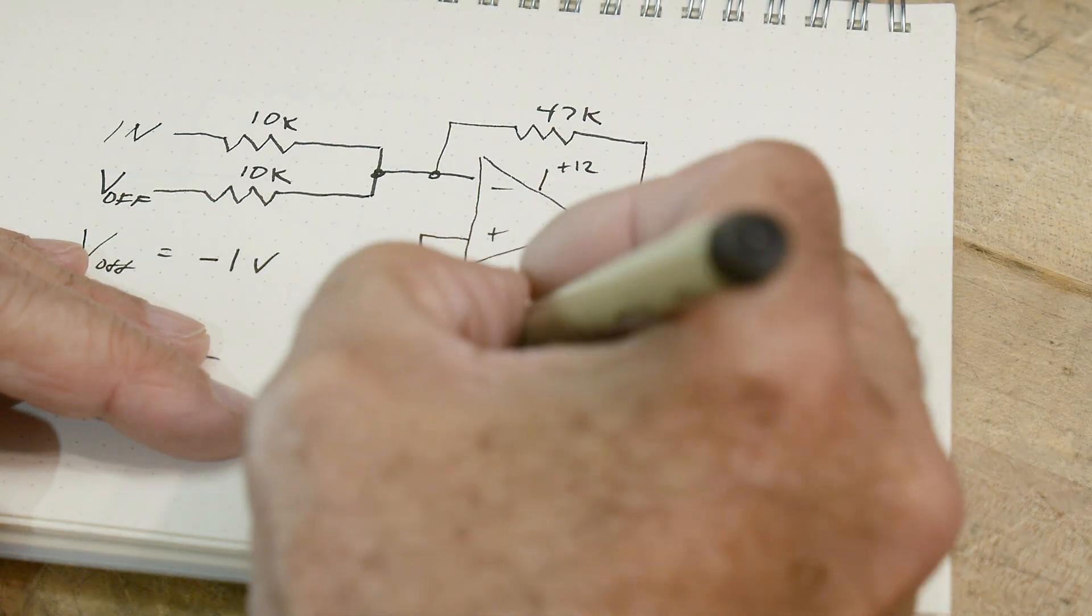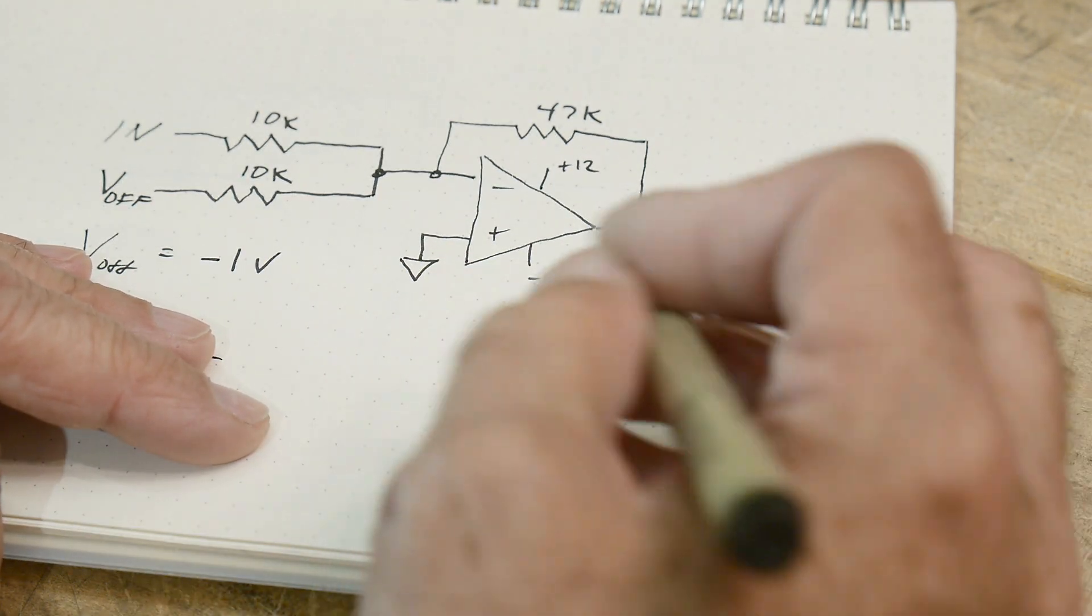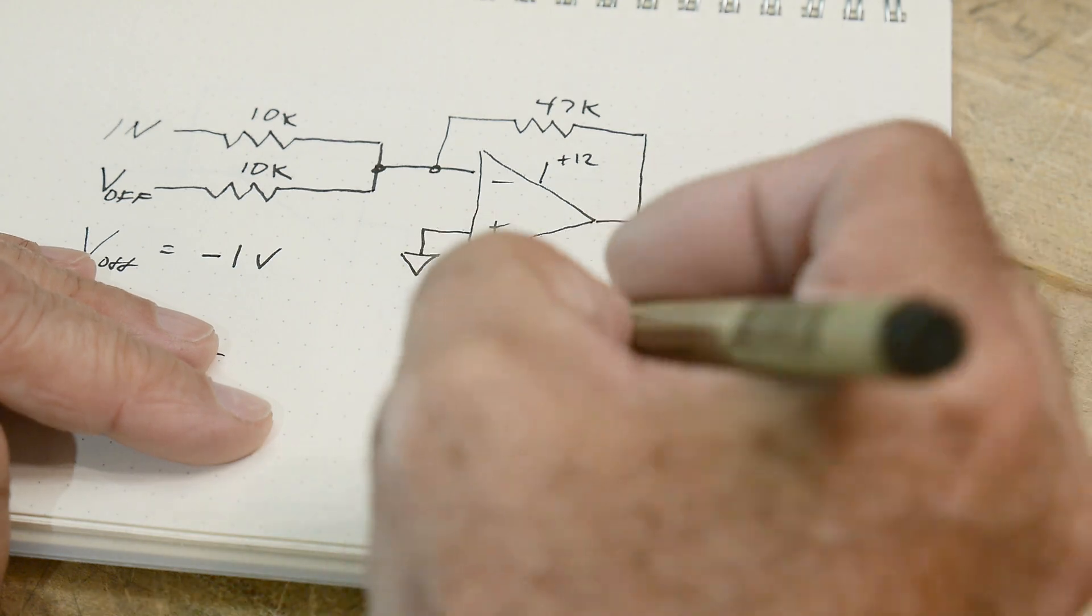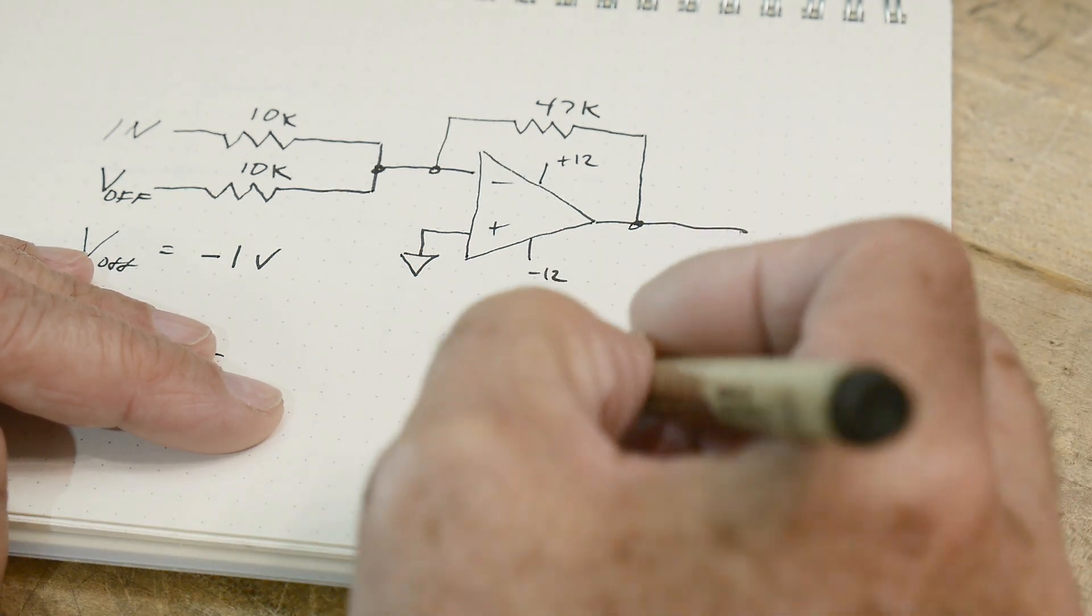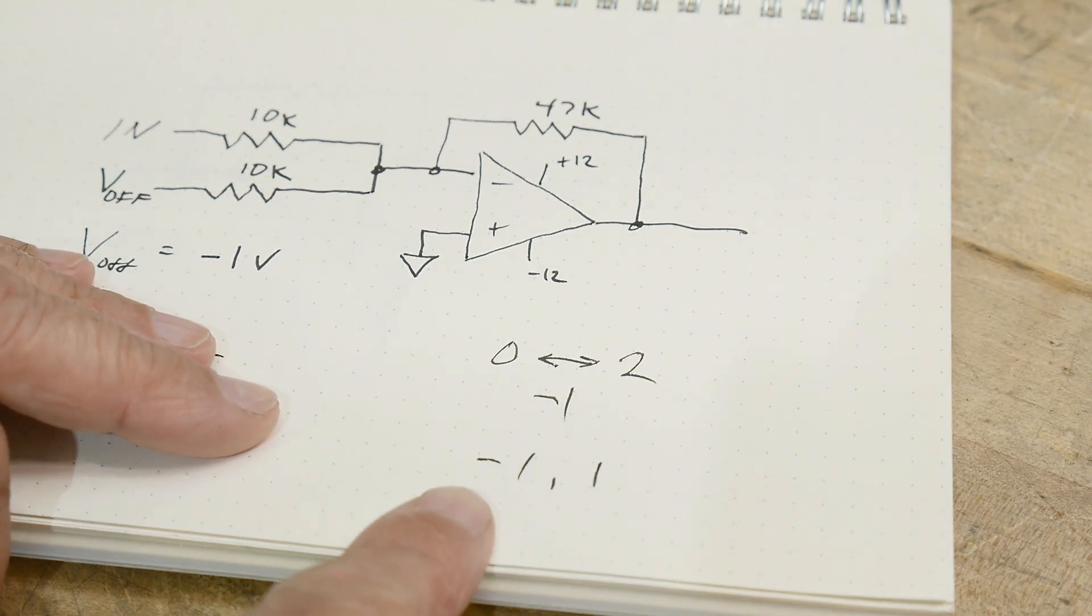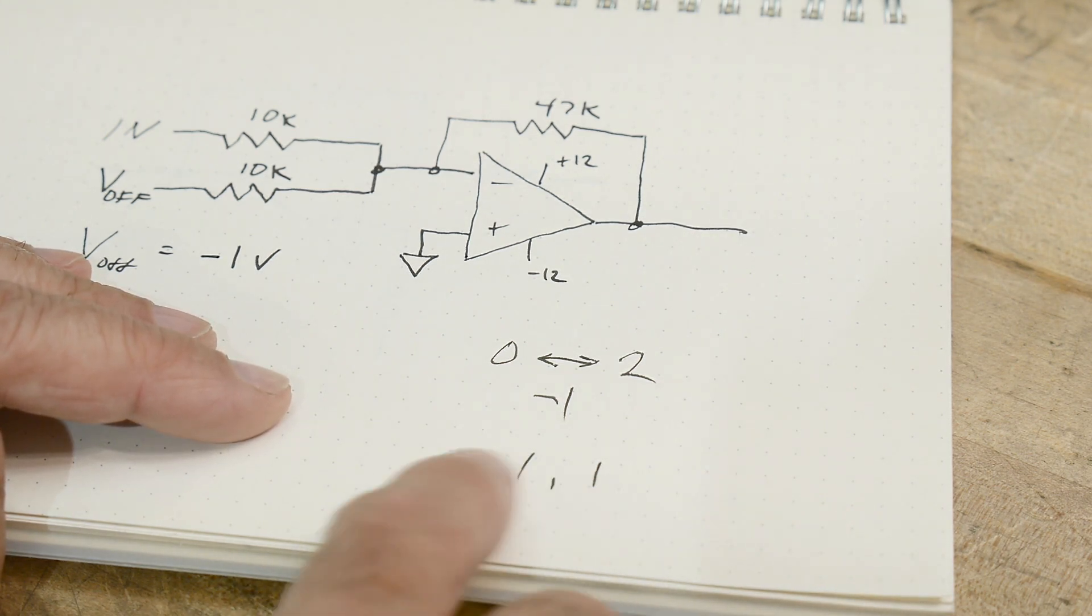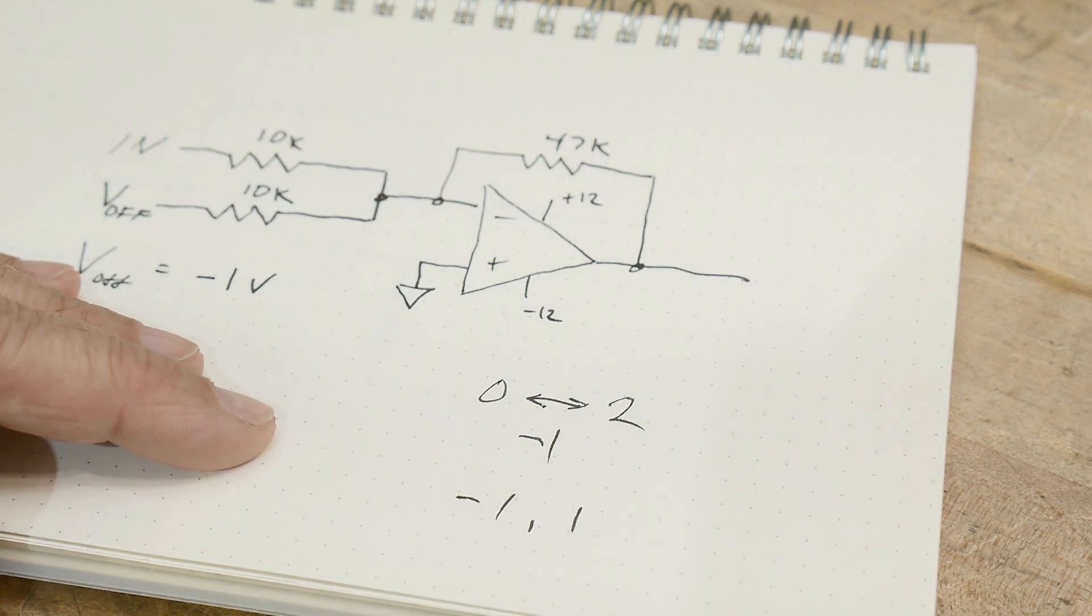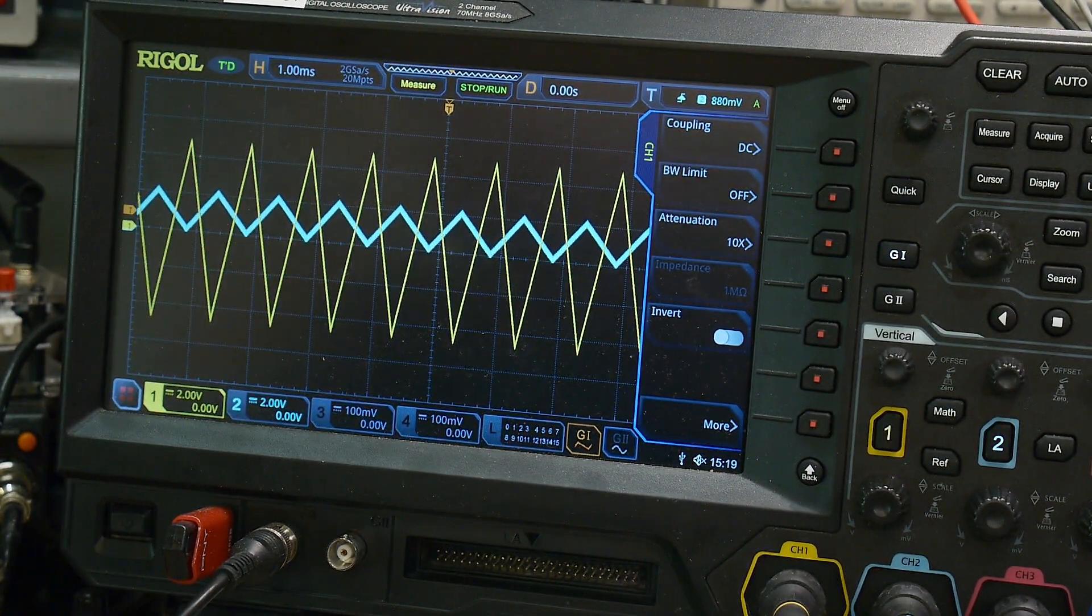So we're going to add, we have zero to two volts, and we are going to add negative one. So we're going to subtract one from both of these, so now we're going to go between negative one and one. Zero minus one is minus one, two minus one is one. So now we have a signal that goes between plus or minus one, and then we can amplify that by the 47k. So that's one way to add offset.